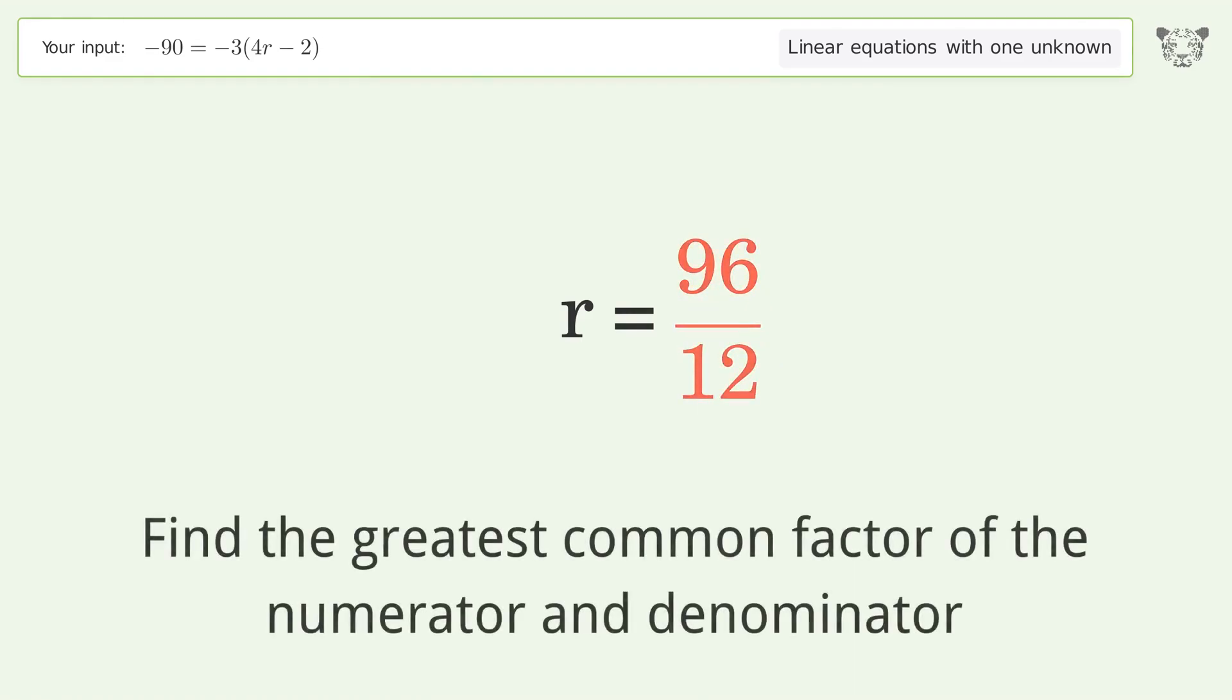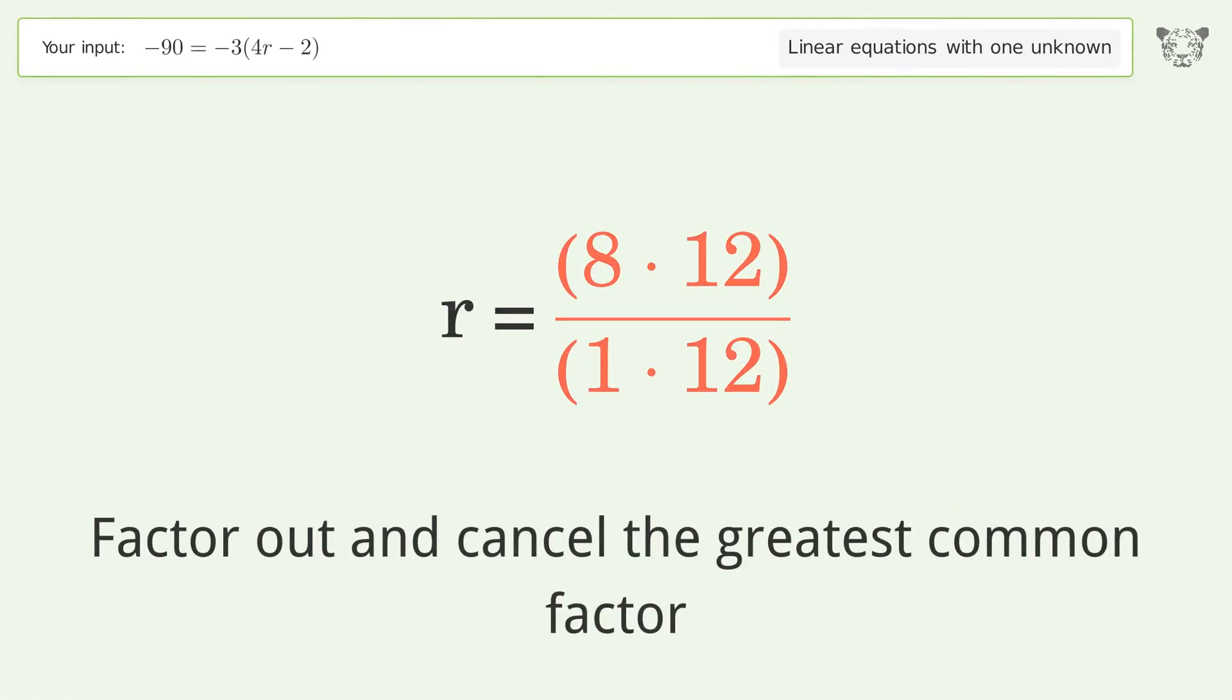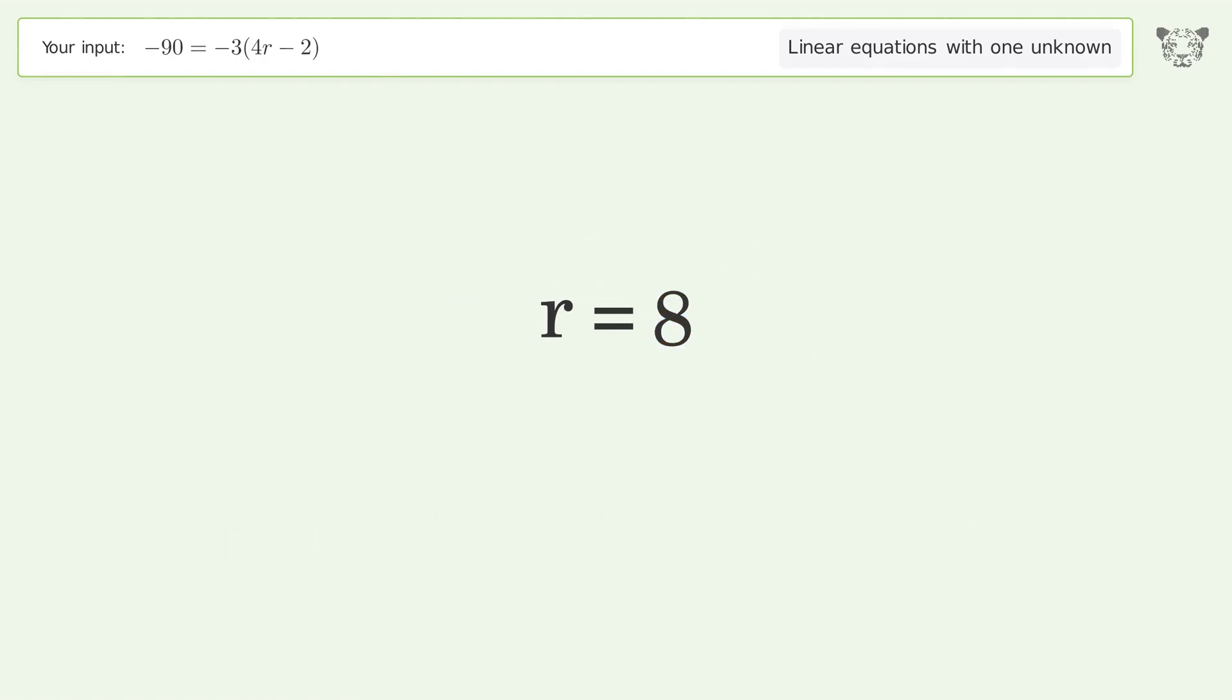Find the greatest common factor of the numerator and denominator. Factor out and cancel the greatest common factor. And so the final result is r equals 8.